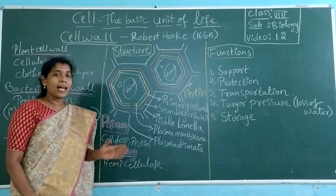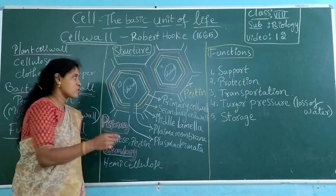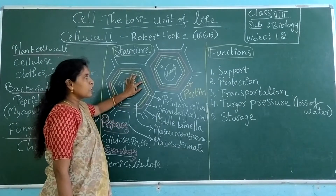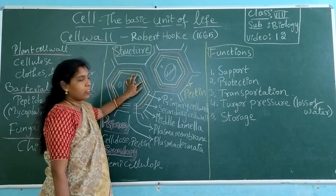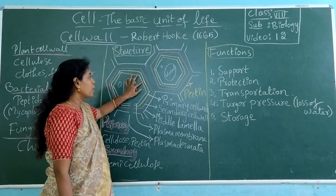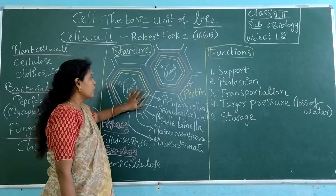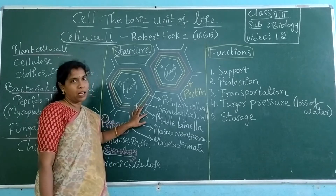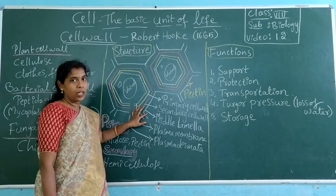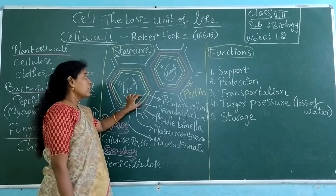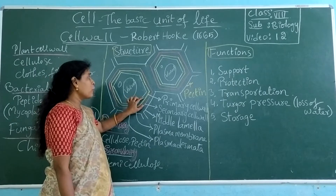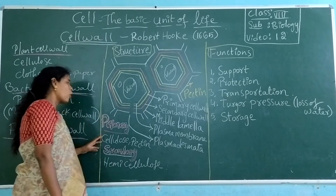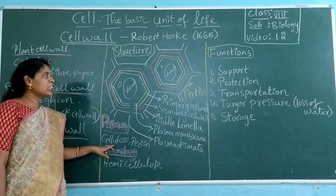This cell wall actually has three layers. The first layer — the primary layer — is the primary cell wall. Then the secondary cell wall. And then the middle lamella. Both the primary and secondary cell walls are made up of cellulose.